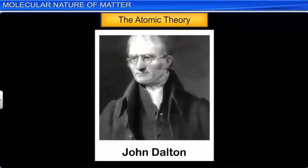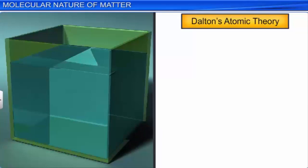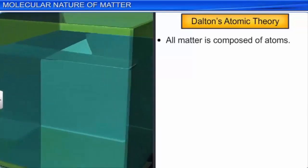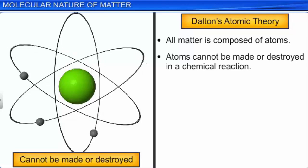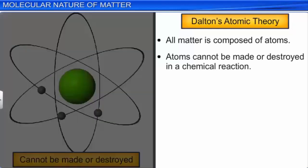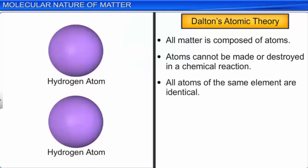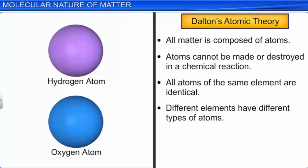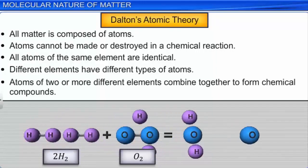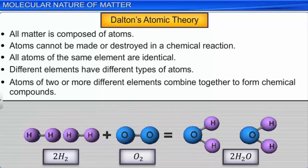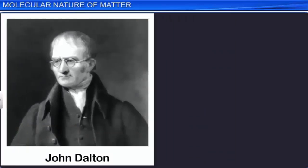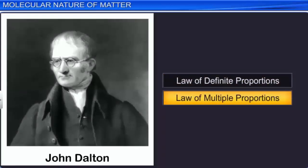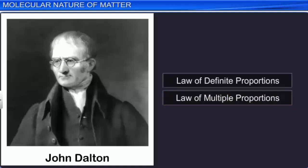Atomic theory is credited to John Dalton. Dalton's atomic theory states that all matter is composed of atoms. Atoms cannot be made or destroyed. All atoms of the same element are identical. Different elements have different types of atoms. Atoms of two or more elements combine to form chemical compounds. Dalton proposed atomic theory to explain the law of definite proportions and the law of multiple proportions, which are obeyed by elements when they combine to form compounds.